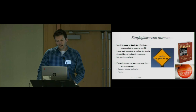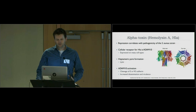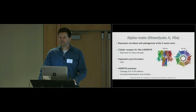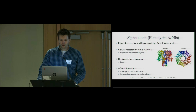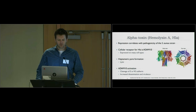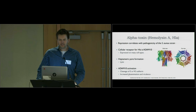Staph can also produce a whole array of toxins — over 15 toxins are described. Today I'm going to talk about one particular toxin called alpha toxin or hemolysin alpha. This was the first toxin discovered for Staph, discovered 50 years ago, and its expression correlates with the pathogenicity of the Staph strain. Strains from invasive staphylococcal disease patients usually express high levels of this toxin. What really sparked recent research was the discovery of the cellular receptor for alpha toxin, which is ADAM10 — a protease expressed on many cell types. The expression of this receptor dictates whether a cell is susceptible to intoxication by this toxin.